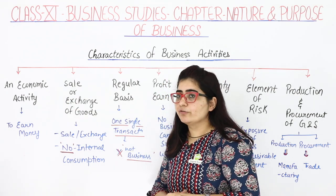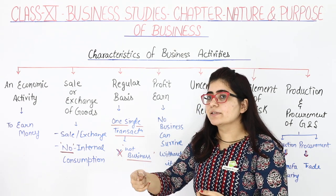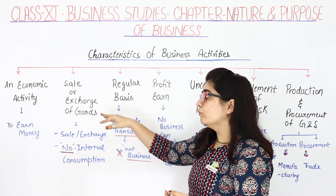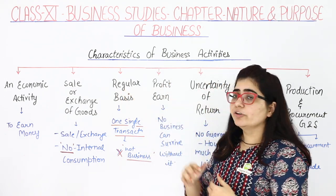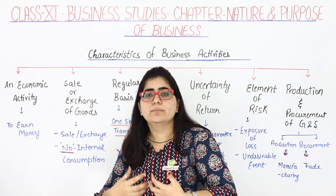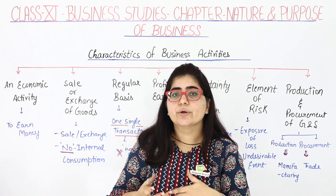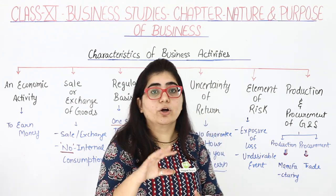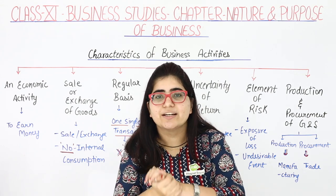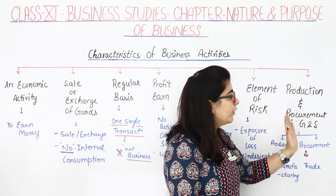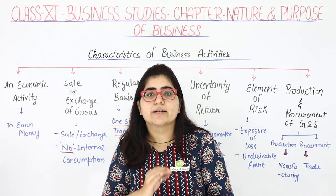We will start from the very first. I have written: one, economic activity — business is an economic activity. Second, sale or exchange of goods — in business, there might be a sale or an exchange of goods. Third, regular basis — business should always take place on a regular basis. Fourth, profit earn — the sole motive of a business should be to earn profit. Fifth, uncertainty of risk — the return you generate from a business is not certain, not definite. Sixth, element of risk — there is always a risk associated with a business. Last, production and procurement of goods and services — here I have used two terms: production and procurement. We will discuss each characteristic one by one.